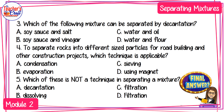Number 3: Which of the following mixtures can be separated by decantation? A) salt solution, B) vinegar solution, C) water and oil, or D) water and flour. Number 4: To separate rocks into different size particles for road building and construction projects, which technique is applicable? A) condensation, B) evaporation, C) sieving, or D) using magnet. Number 5: Which of the following is NOT a technique in separating a mixture? A) decantation, B) dissolving, C) filtration, or D) sieving.